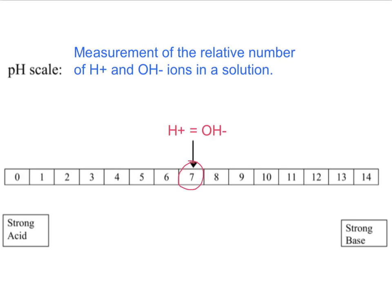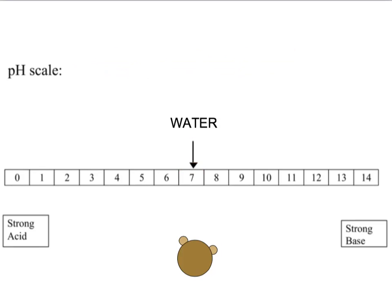This is the point at which the H+ ions and the OH- ions are equal to one another. Water has a pH of 7. This is because when water dissociates, we have equal numbers of both ions. pH of 7 is not acidic or basic. It is neutral.